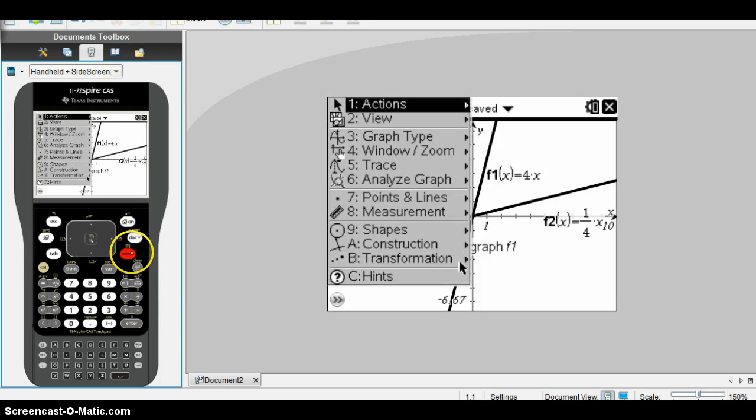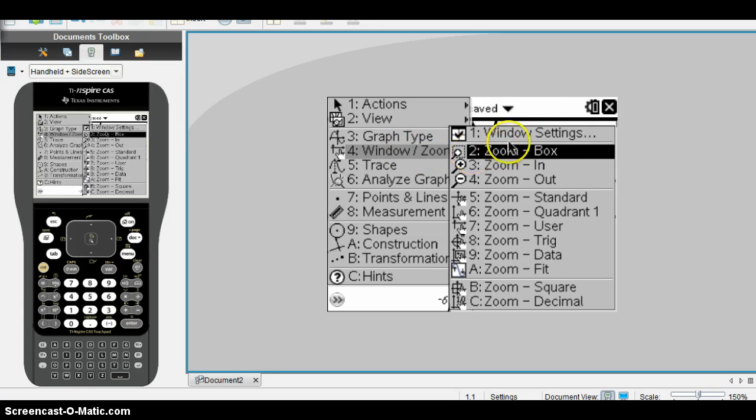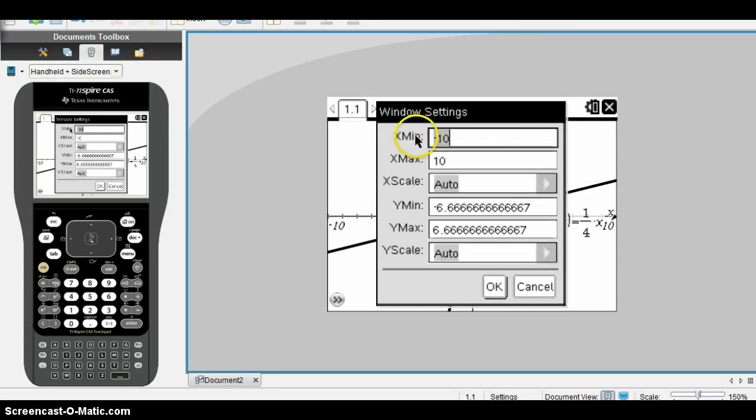If you need to change the window in any way, you would go to Menu, Window, Window Settings. In this window, you may change the X minimum and the X maximum. Those will be affected by your domain. It will allow you to go further to the left of the graph and further to the right. Skipping down to the Ymin and the Ymax, those will allow you to see more of the graph up above for the Ymax and more of the graph below for the Ymin.